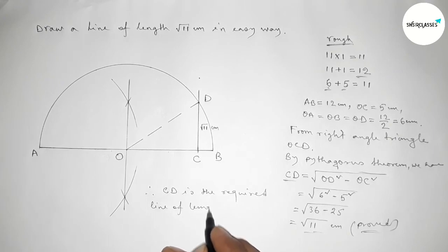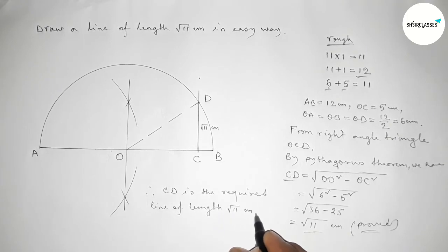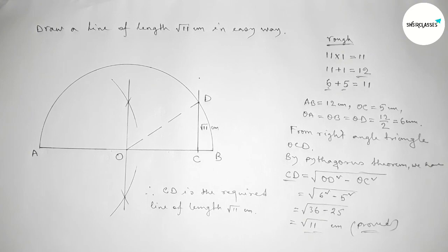By this way you can draw a line of length root 11 centimeter in an easy way. That's all. Thanks for watching. If this video is helpful to you, please share it with your friends.